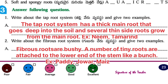Next one, answer the following questions. First question: write about the taproot system and give two examples. The taproot system has a thick main root that goes deep into the soil and several thin side roots grow from the main root. Example: neem, tamarind, etc.